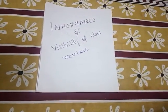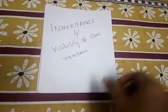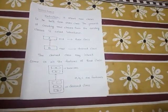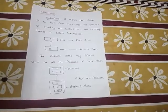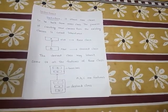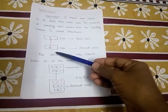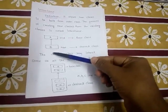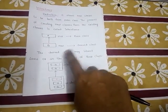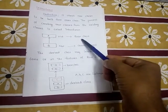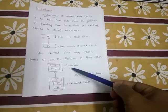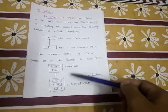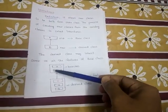Hello everyone. Today we'll discuss inheritance and visibility of class members. Inheritance is creating a new class from an existing class — getting the features of the old class into a new class. For example, if B is a new class and A is the old class, we are inheriting the features of A into B. The new class is called the derived class and the old class is called the base class. If a base class has features A and B, and a derived class has only C, then when it is derived from the base class, it also inherits A and B.